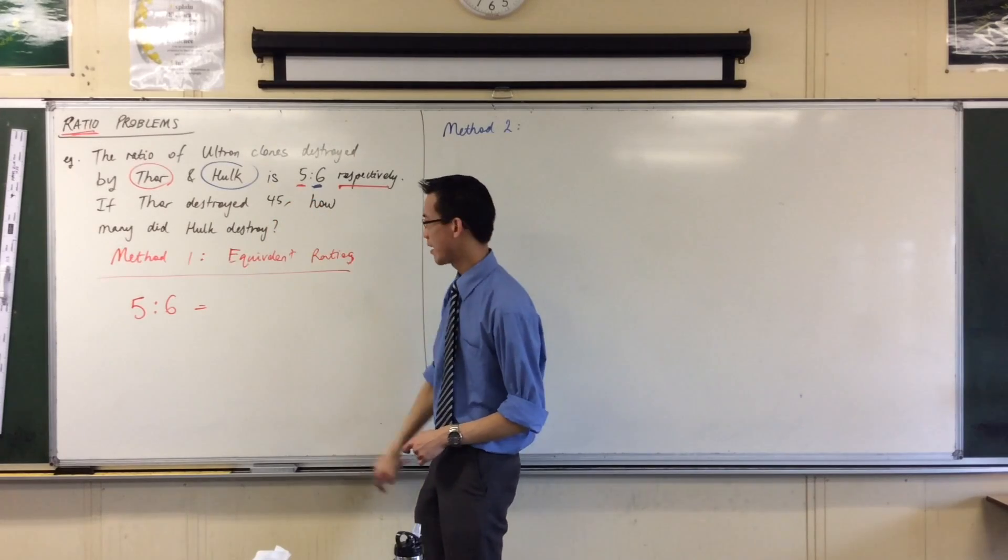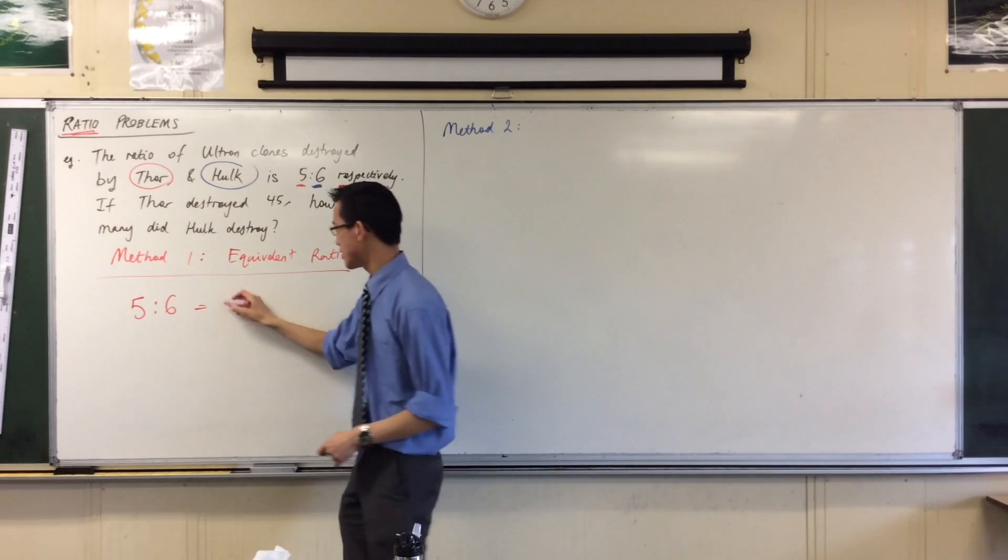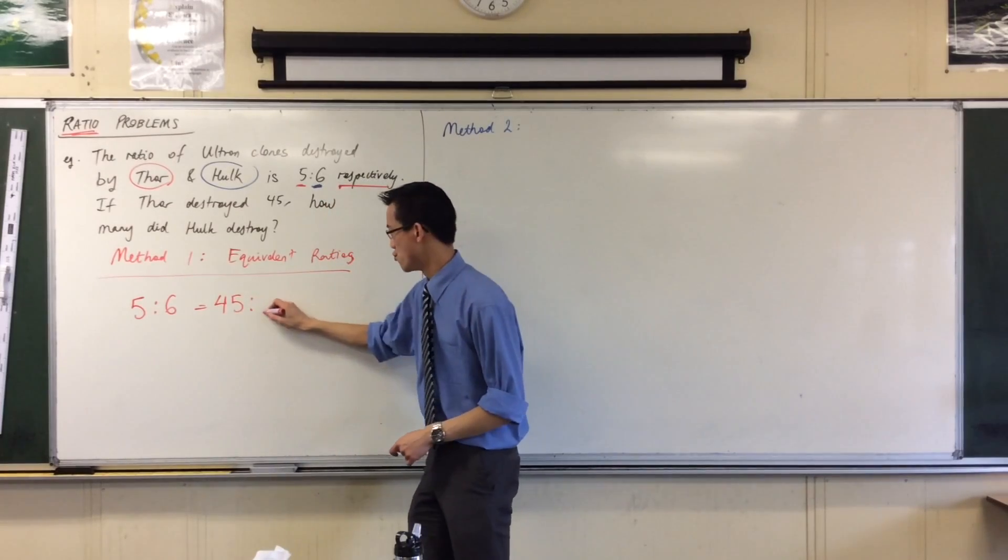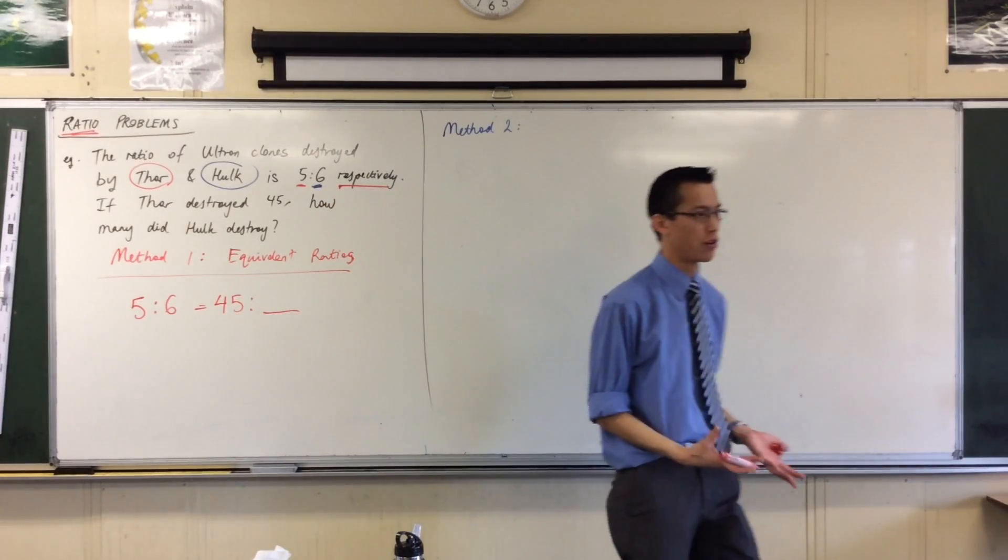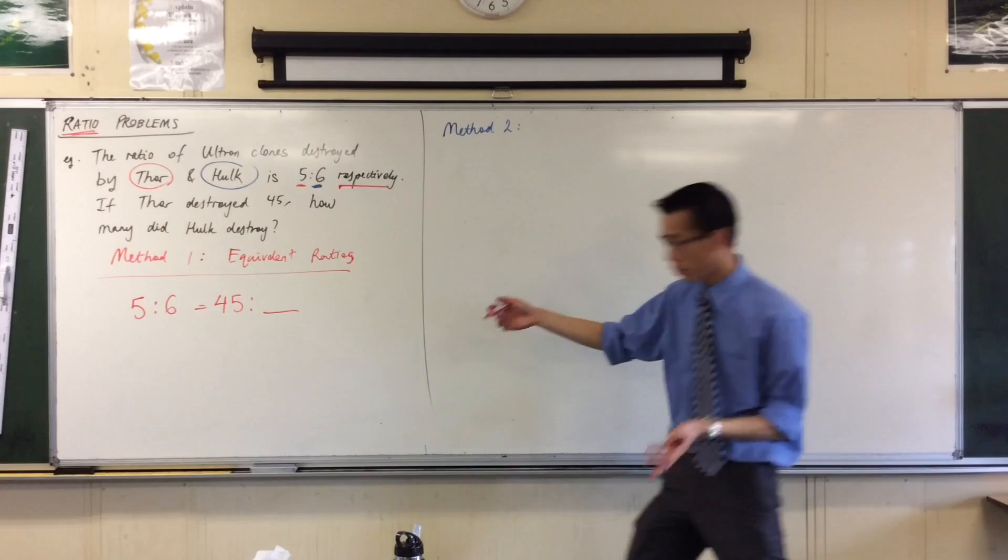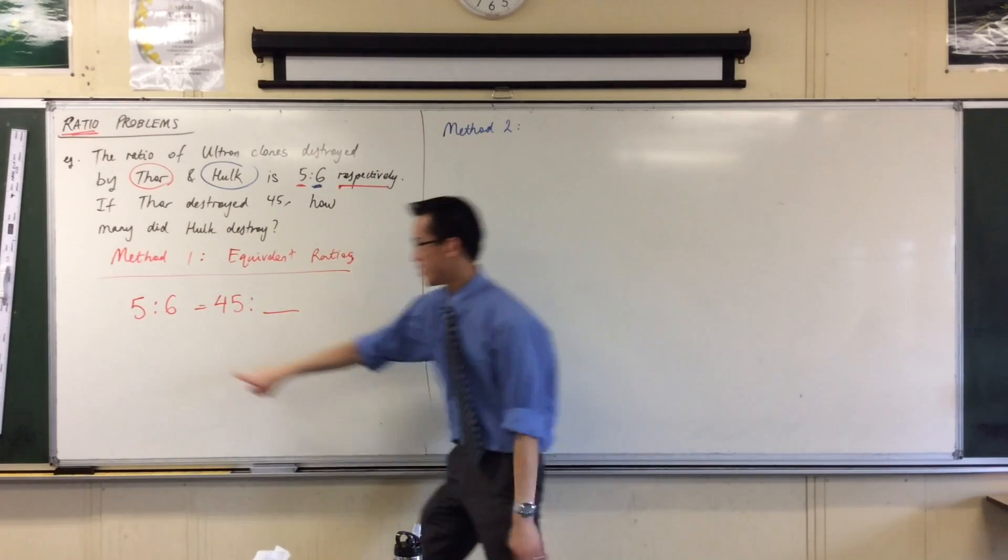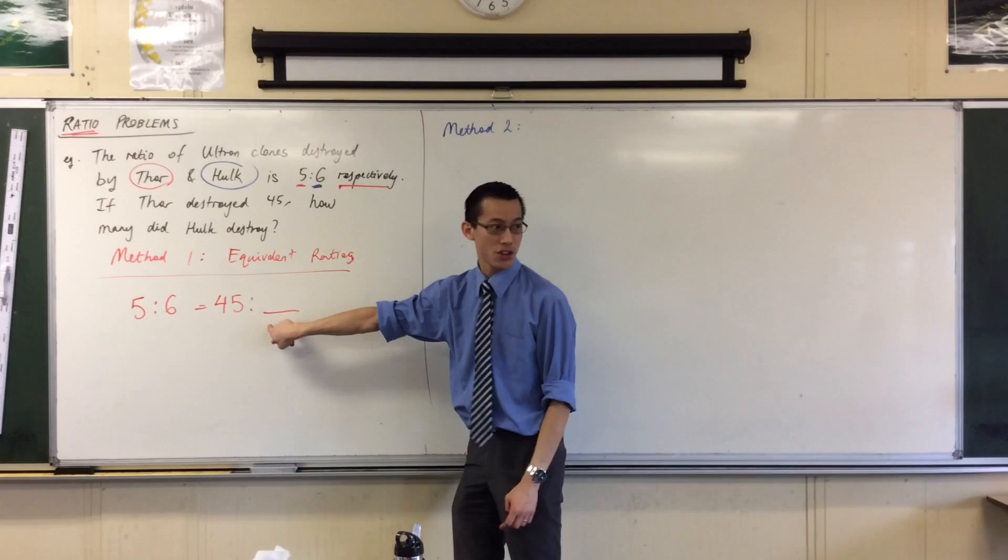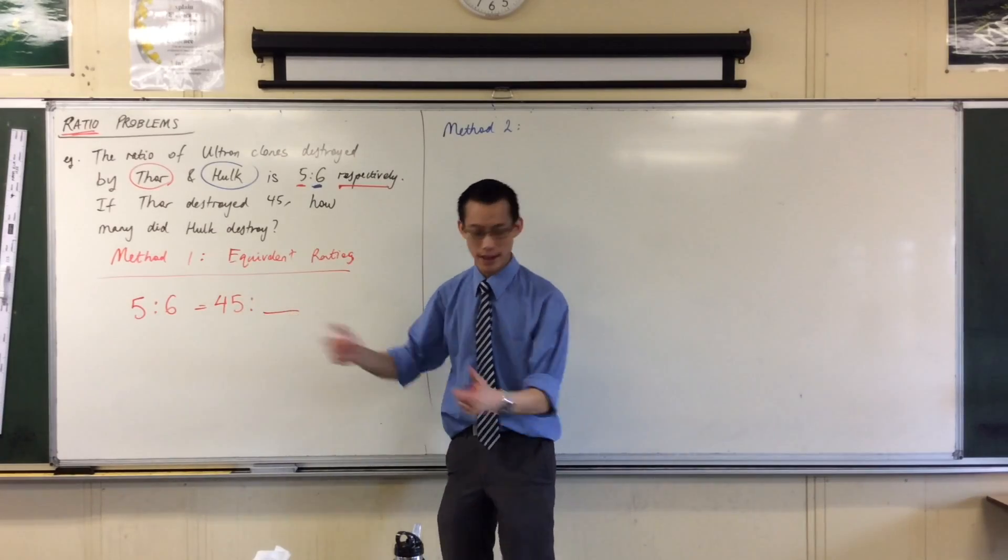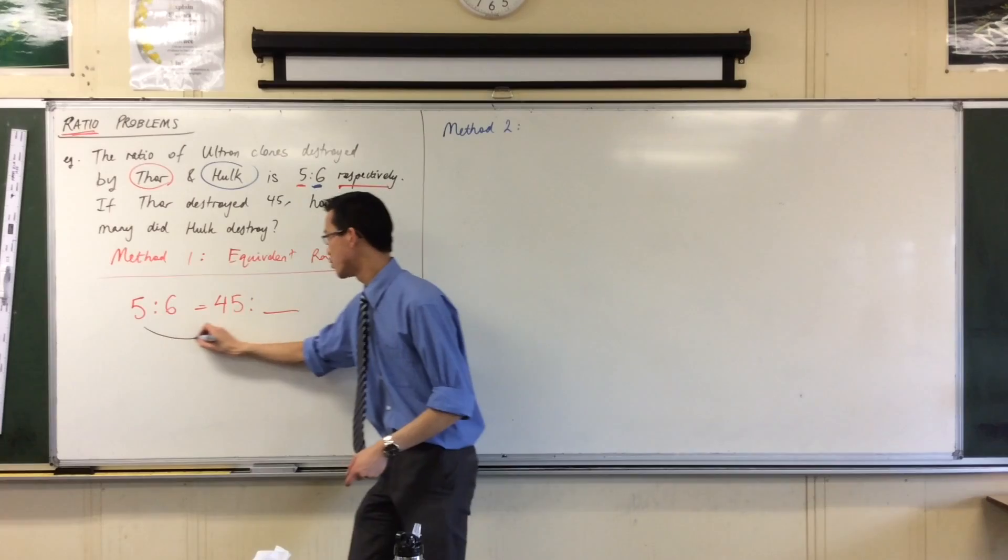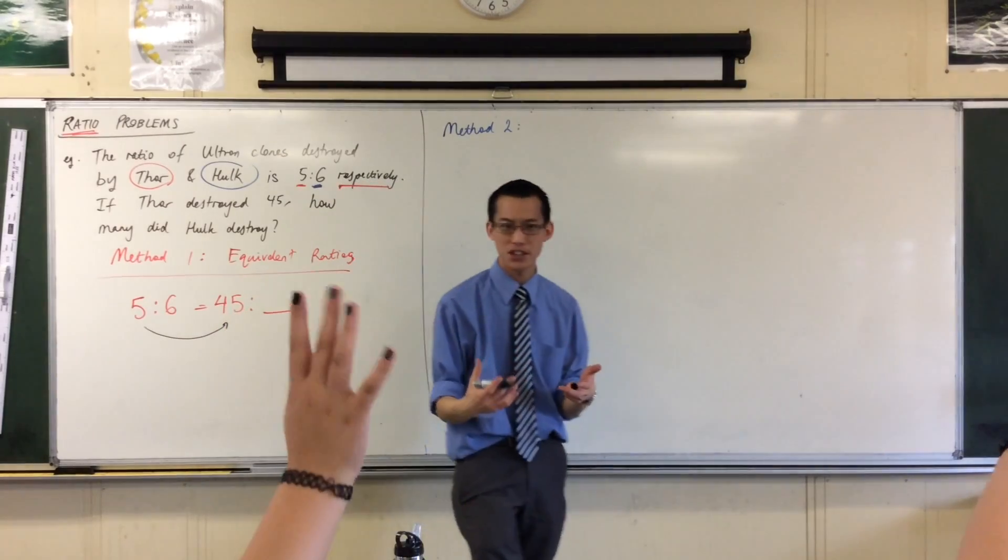45 is the first number. 45 represents this first number here. So, this ratio is equal to another ratio, 45 to something else that I don't know. And the something else I don't know is how many Hulk got. So, what I've got here is, this ratio and this ratio, they're the same.